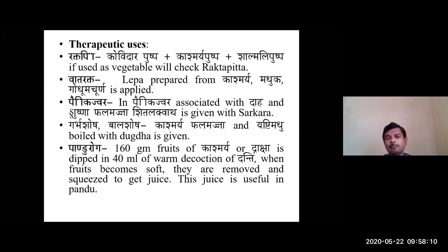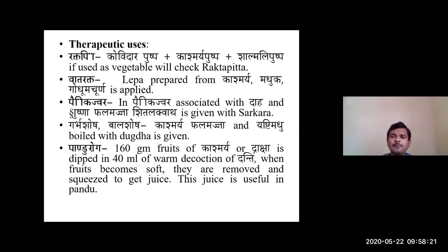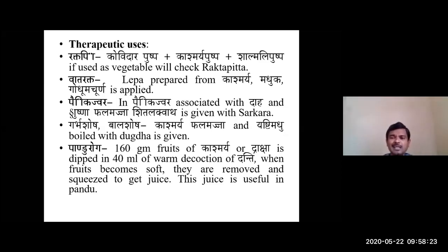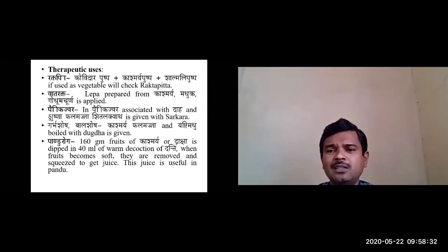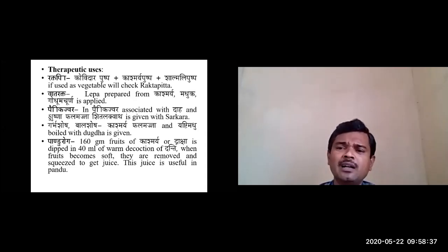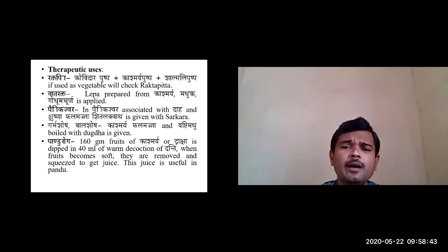If used as a vegetable, it overcomes the conditions called Rakta Pitta. Even single drugs like Shalmali Pushpa Swarasa can be used to check Urdhva Rakta Pitta — that is Nasagata Rakta Pitta — when you do the Nashya Karma. The Swarasa of these flowers has Kashmaryya properties, so it definitely performs Stambha Karma. In case of Vata Rakta, you can prepare a Lepa from Kashmaryya, Madhuka, and Godhu Ma Churna.